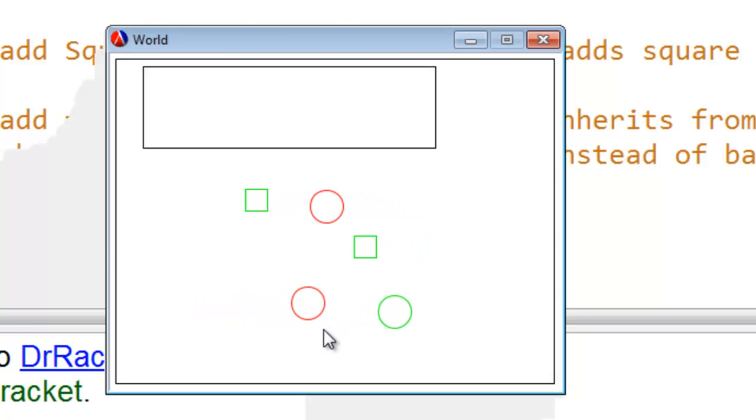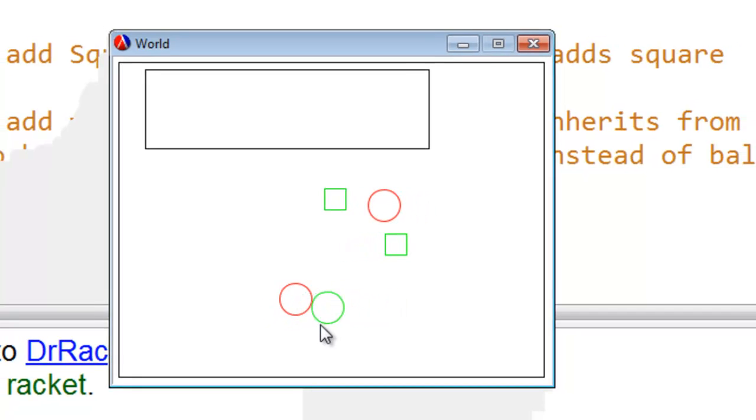So now I have three kinds of objects. I have balls, I have flashing balls, and I have squares. That's what my system is supposed to do.